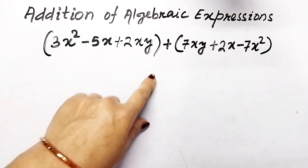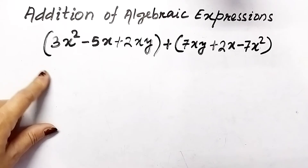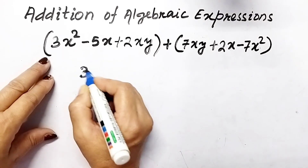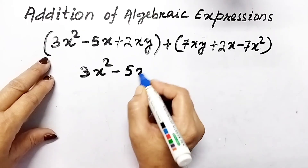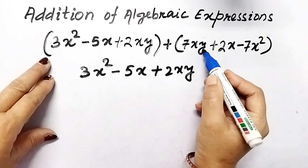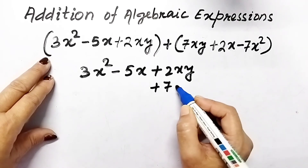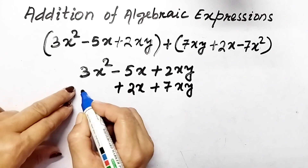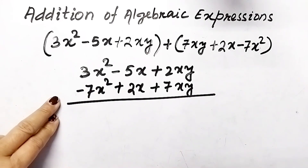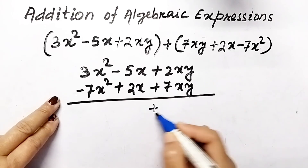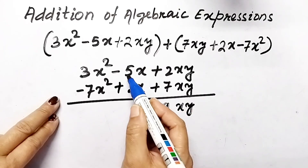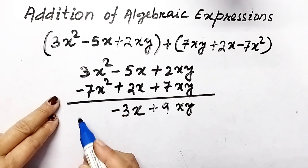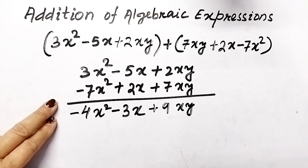Now let us add using the column method. In the column method, we arrange like terms so that both like terms are in the same column. We write the first expression, then write 7xy below its like term 2xy, write plus 2x below minus 5x, and write minus 7x² below its like term 3x². Now adding in each column: 7 plus 2 gives 9xy; minus 5 plus 2 gives negative 3x; negative 7 plus 3 gives negative 4x². This is the column method of addition.